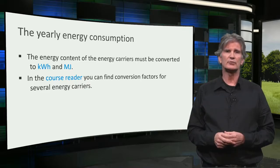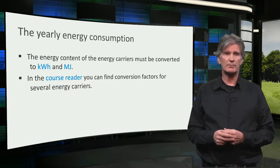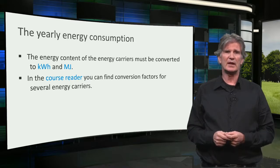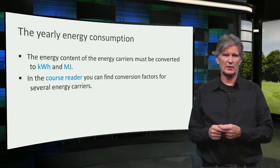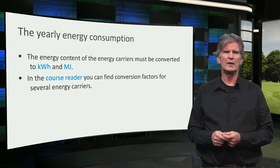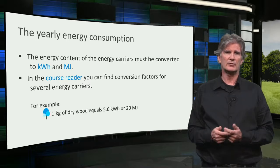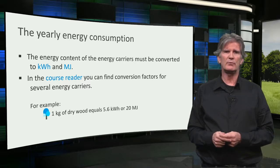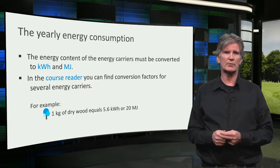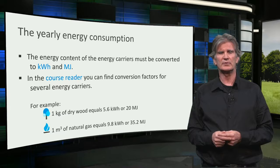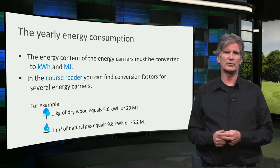When you have the data on the energy use of your building, it should be made comparable. Therefore, the energy content of the energy carriers must be converted to kilowatt hours and megajoules. In the course documents for this week, you can find conversion factors for several energy carriers. For example, one kilogram of dry wood equals 5.6 kWh or 20 megajoules, and one cubic meter of natural gas equals 9.8 kWh or 35.2 megajoules.